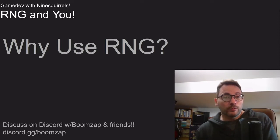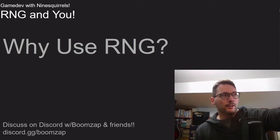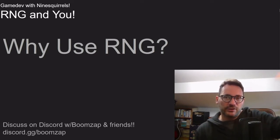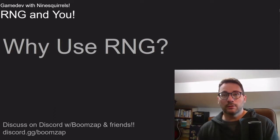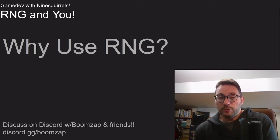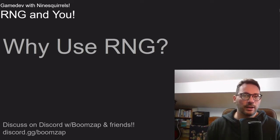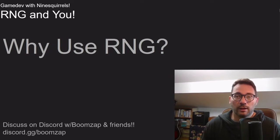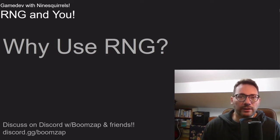A lot of times what we're using randomness for is actually dumbing down AI. The AI is going to try to shoot you in the head, but that shot is going to be offset by some number of pixels to make sure the computer doesn't always get a headshot on you. In simple strategy games, the computer can think ahead, figure out the best decision, and consistently defeat you. We can use randomness to alleviate that.